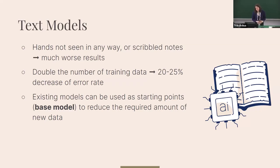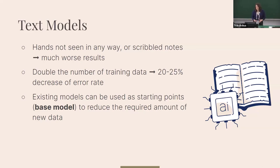You can always add more training data to improve a model. Doubling the amount of training data can already produce a 20 to 25 percent decrease in error rate. Existing models can also be used as base models to reduce the amount of new data needed, but always test this because it's not always as straightforward as it sounds.